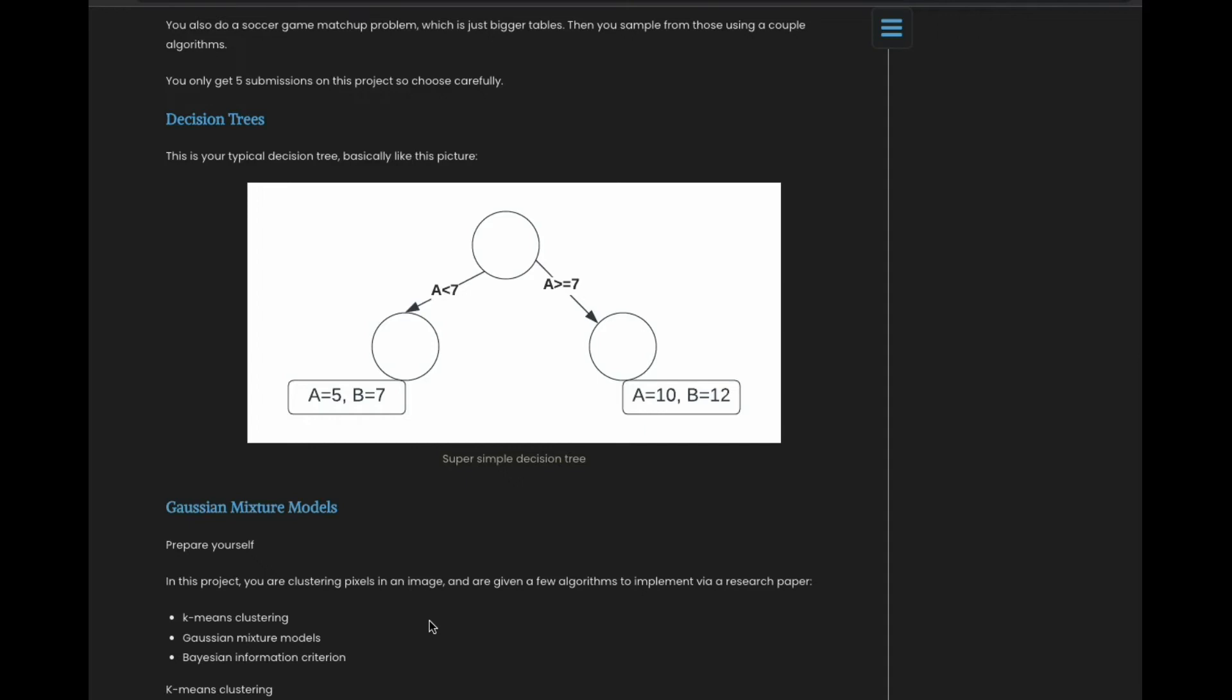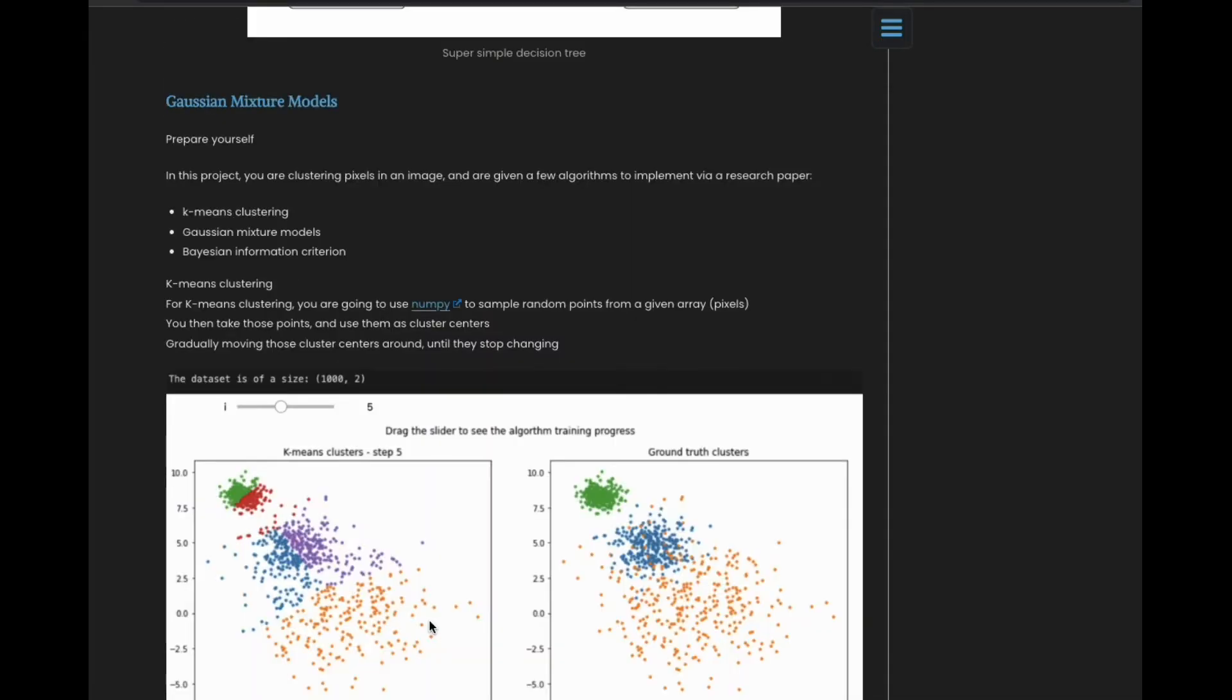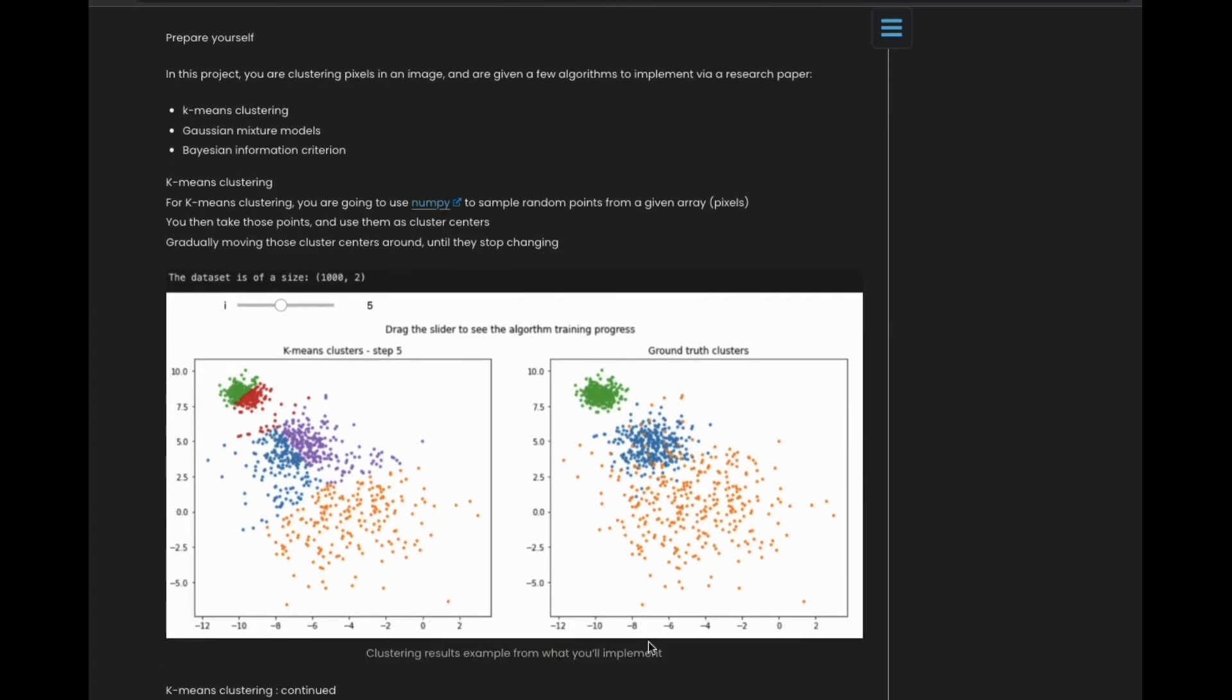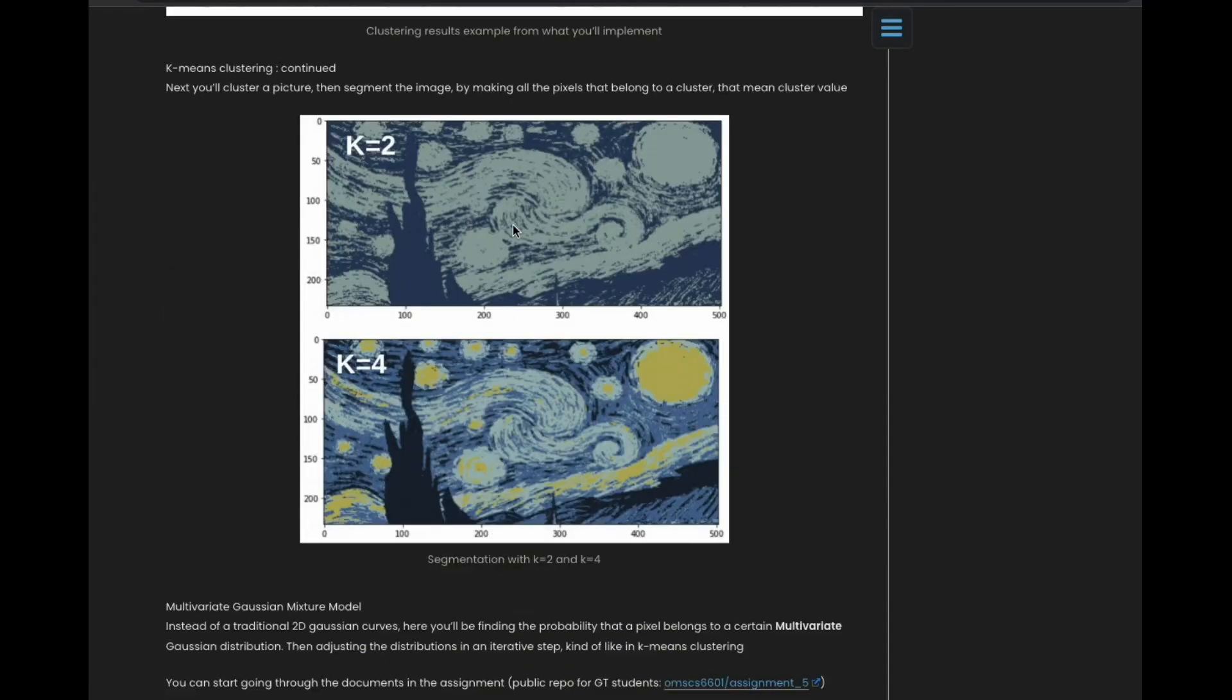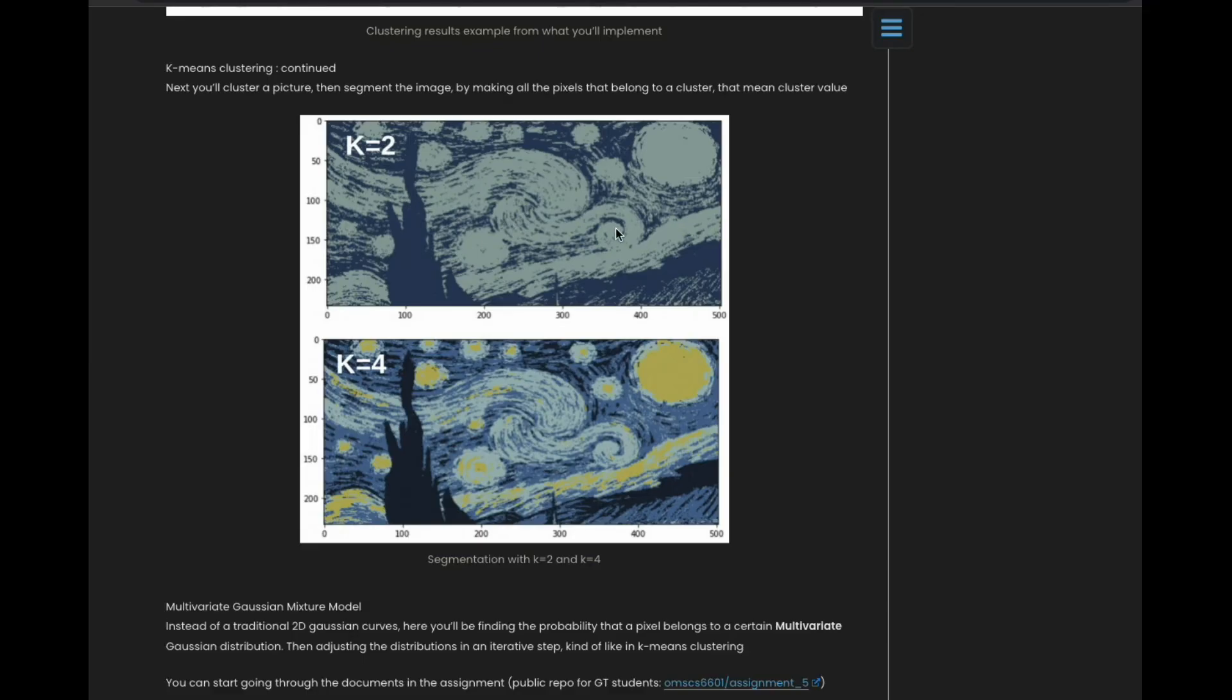Gaussian mixture models. This one is the toughest project by far, and it is k-means clustering to start out. So you're given some data points and you're supposed to group those data points into clusters. Here's this image. So you basically take the pixels and you make two groups, so basically two colors, and you represent the picture in only two colors.